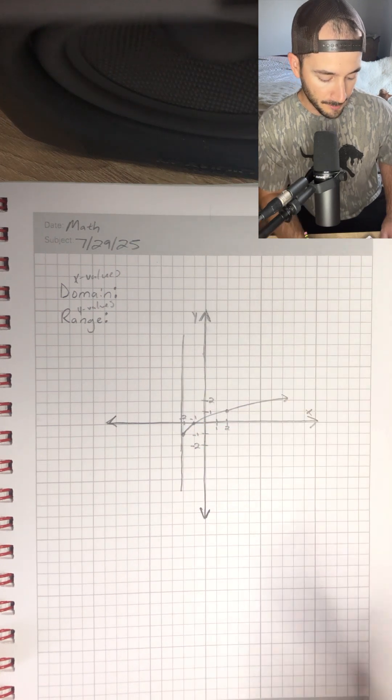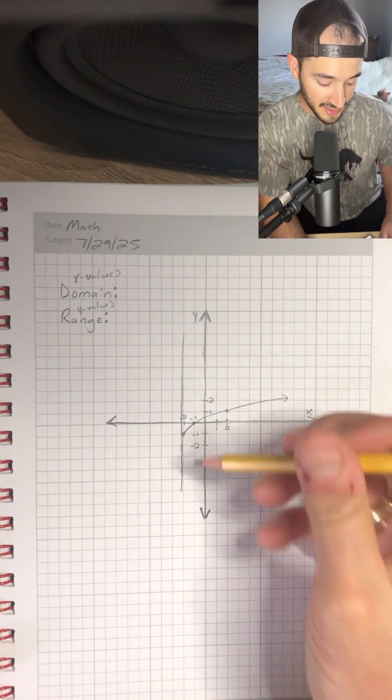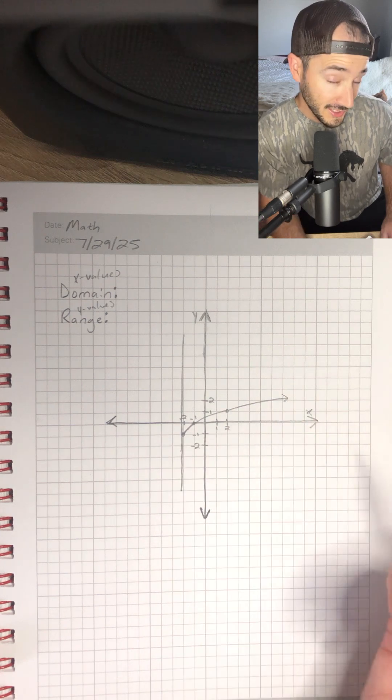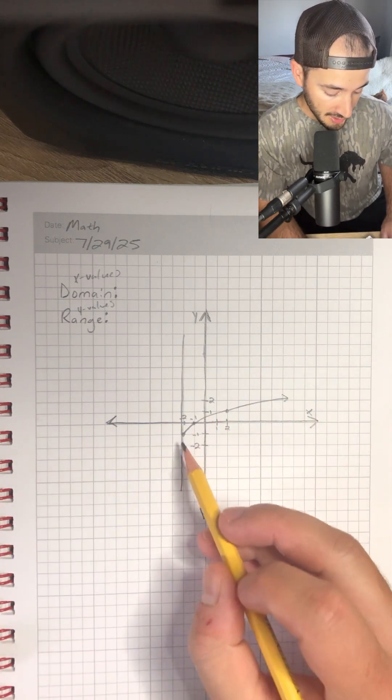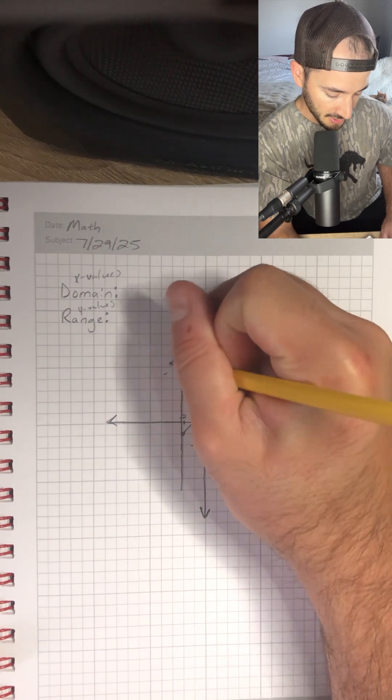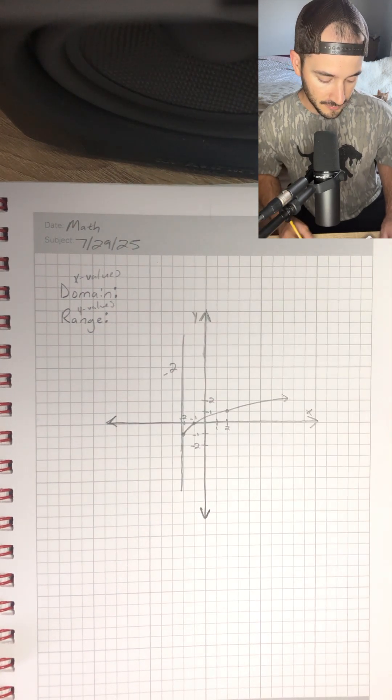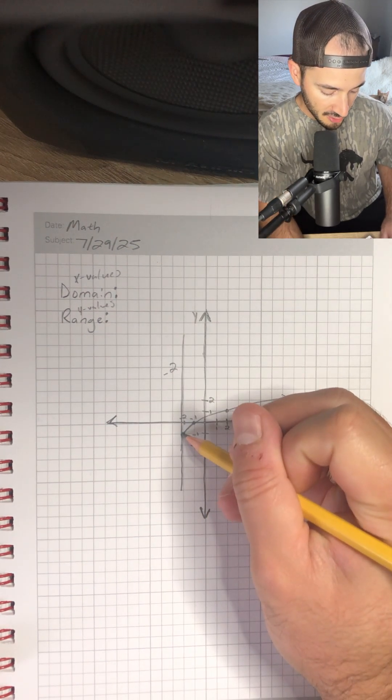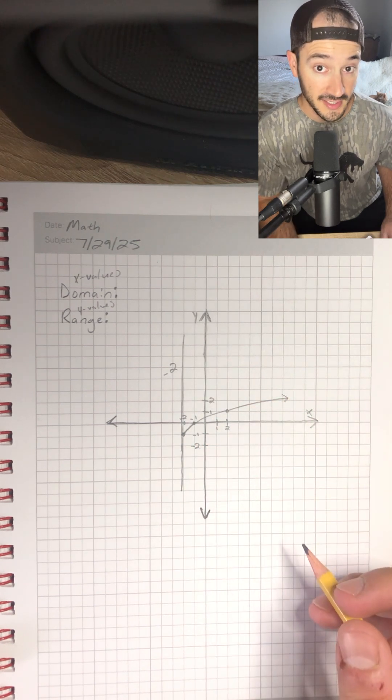Think of that as kind of like a boundary or a fence that's preventing this graph from going any further to the left. And that line is at negative 2. So I'm just going to make a note that that's at negative 2. And we have a filled in circle, so that means that it includes negative 2.